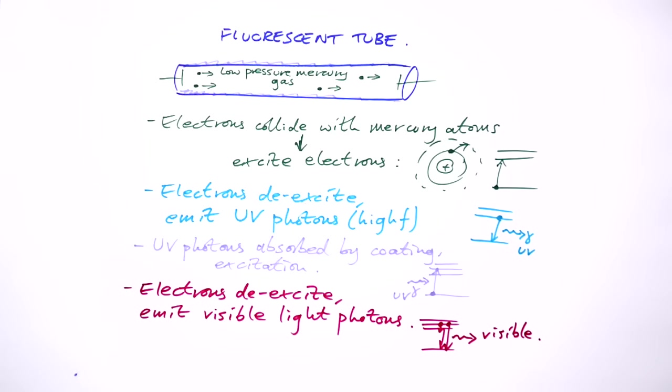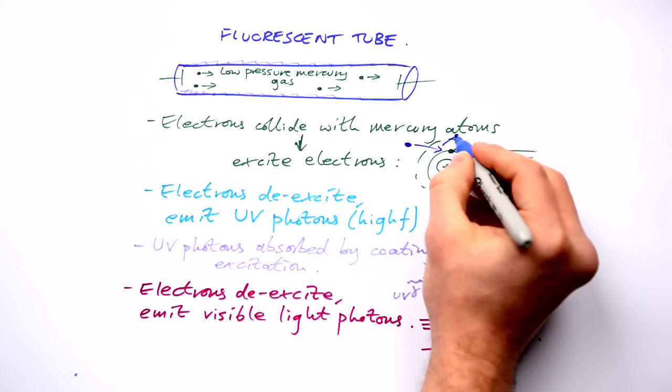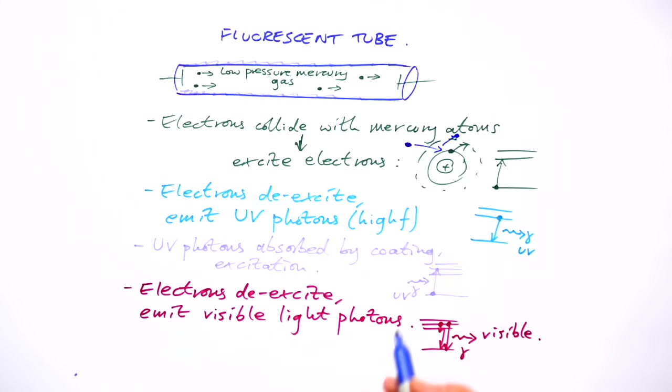So that's how a fluorescent tube works. Notice that the excitation that we get to begin with isn't due to the absorption of photons. It's an electron coming in, whacking into another electron.